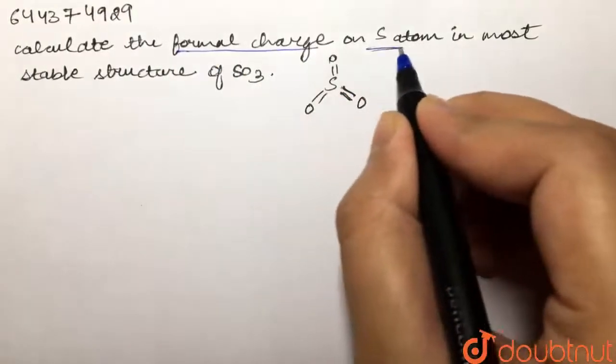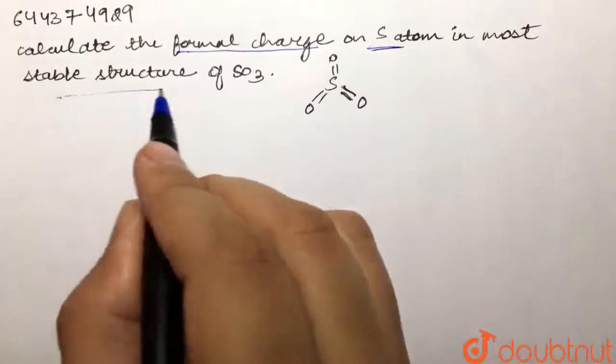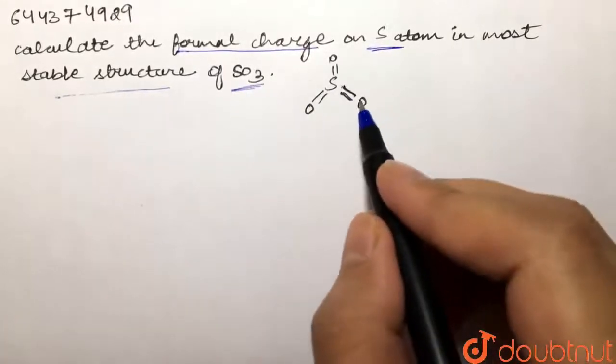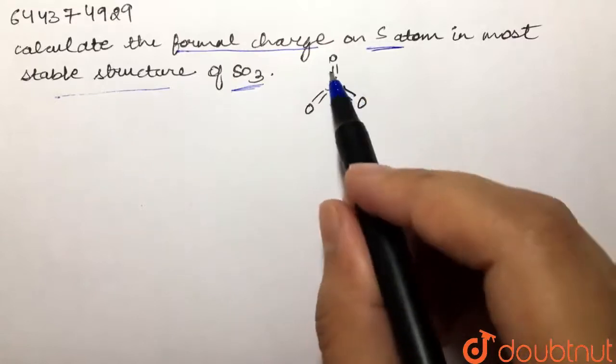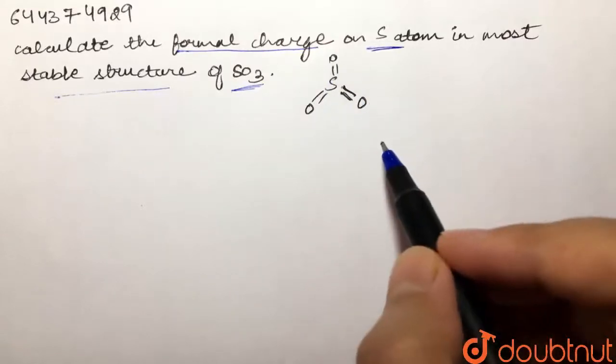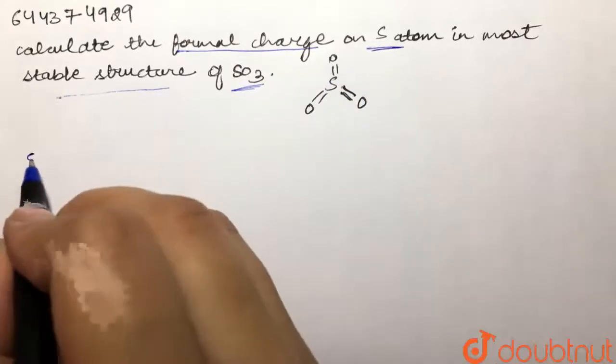charge on the sulfur atom in the most stable structure of SO3. The structure given to us has sulfur double bonded to oxygen, double bonded to oxygen, and double bonded to oxygen. So we are supposed to find the formal charge on the sulfur atom.